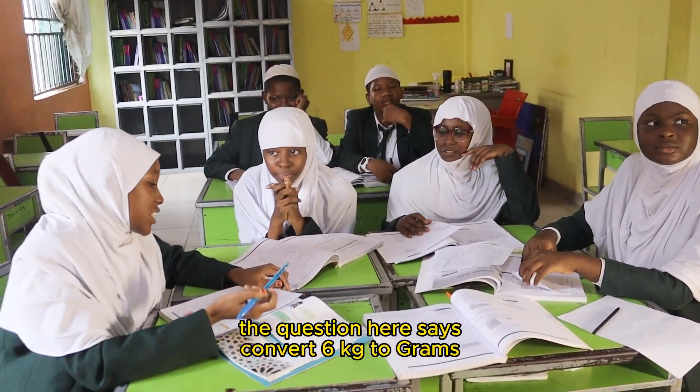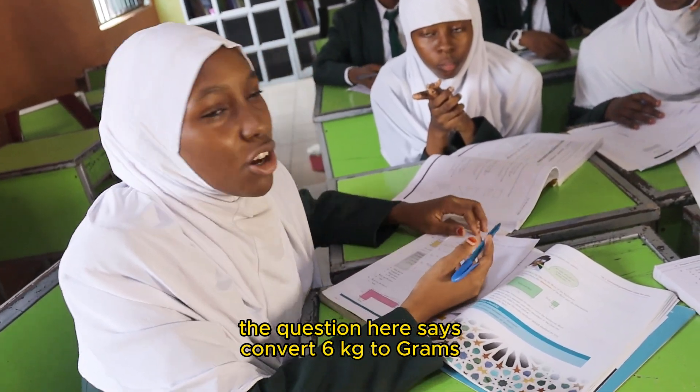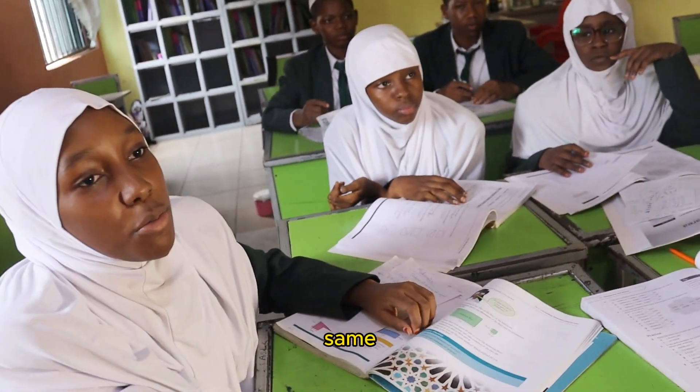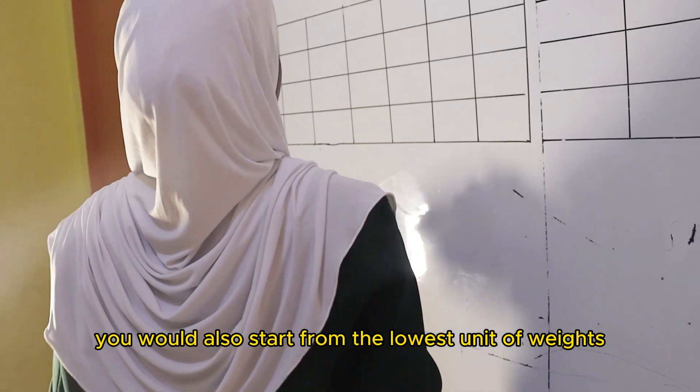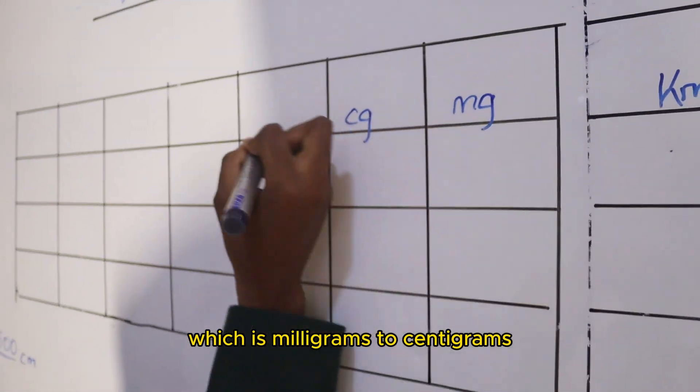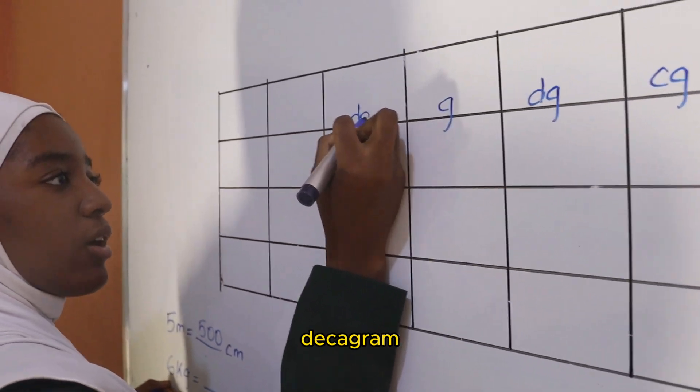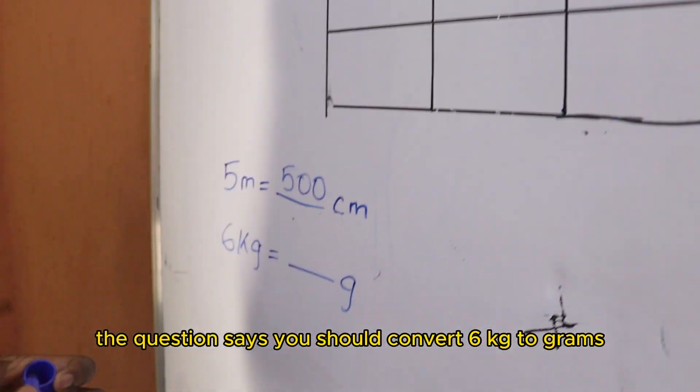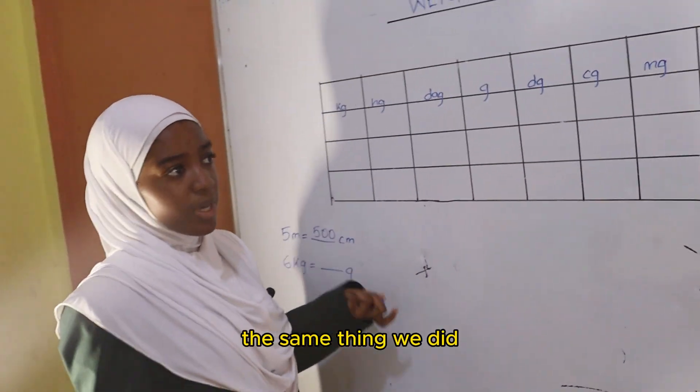The question here says... The same method goes for weights. It would also start from the lowest unit of weights, which is milligrams, to centigrams, to decigrams, then grams, decagrams, hectograms, and kilograms. The question says you should convert 6 kilograms to grams. The same exact thing.